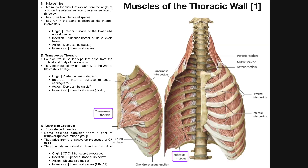So now we're going to pick up with this group of muscles which are called the subcostalis or subcostal muscles. These are a set of thin muscular slips that extend from the angle of one rib on its internal surface to the internal surface of a rib below — really two ribs below — and so they're going to cross two intercostal spaces.